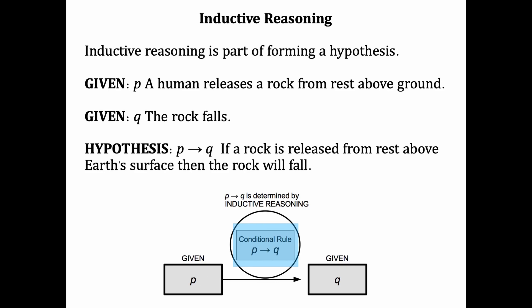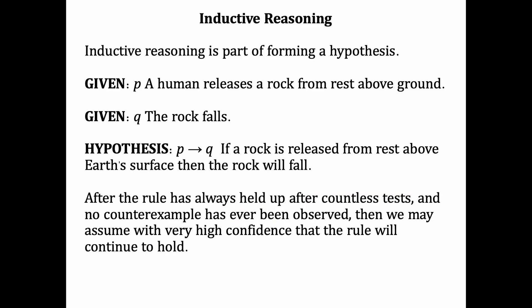The hypothesis is, if a rock is released from rest above Earth's surface, then the rock will fall. It's written as an if-then statement, and it's something that can actually be tested. After the rule is held up countless times, and no counterexample has ever been observed, we may assume with very high confidence that the rule will always continue to hold, even though we can never be 100% certain that it will.